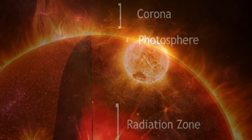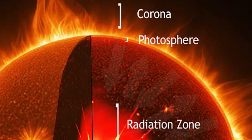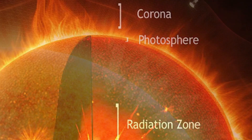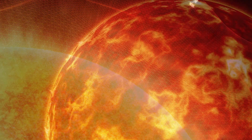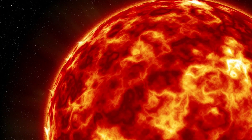The Photosphere is the visible surface of the Sun, where light is emitted and the heat we receive on Earth originates. It has a temperature of about 5,500 degrees Celsius. This is not a solid surface, but a layer where the Sun's gas becomes transparent enough for light to escape — this is the layer we see with the naked eye.